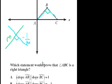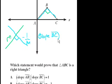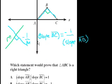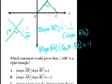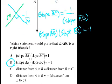So slope of BC should equal the negative inverse of the slope from A to B. If we multiply both sides by slope AB, we get: slope AB times slope BC equals negative 1. And if we look at the choices, choice B is exactly what we wrote.